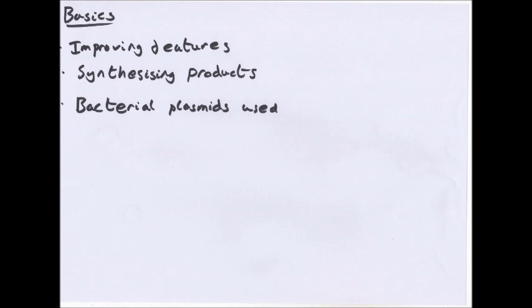We use bacterial plasmids a lot because they're very useful. What you can do is cut the plasmid using a restriction enzyme, then cut the gene you want with that same restriction enzyme. So you get the gene you want. Since they now have sticky ends which are complementary, you can stick them together using ligase. You've now got that gene in the plasmid - this is recombinant DNA. You put it in a bacterial cell, it will replicate, and you'll get that bacteria producing the compound you want.